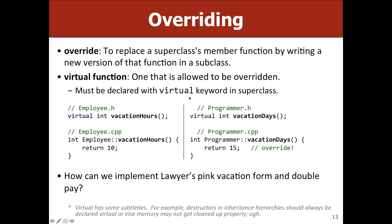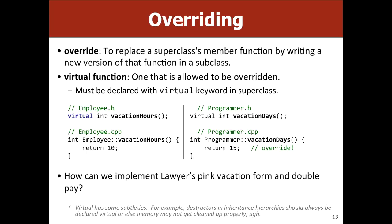This is called overriding: replacing a superclass's method with a new version in the subclass. In C++, you have to use the keyword virtual in the superclass, which tells the compiler that this method might have a more specific implementation in a subclass. Always use virtual — there's no good reason not to. Use it both in the superclass and the subclass to avoid weird bugs.